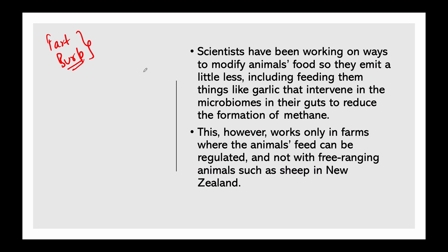This has long been recognized as a problem, but addressing it has been difficult because no one really knows how much the average cow or sheep emits. Scientists have been working on ways to modify animals' food so they emit a little less, including feeding them things like garlic, which intervenes in the microbiomes in the gut to reduce the formation of methane. However, changing feed only helps animals which are on farms — not free-ranging animals such as sheep in New Zealand.